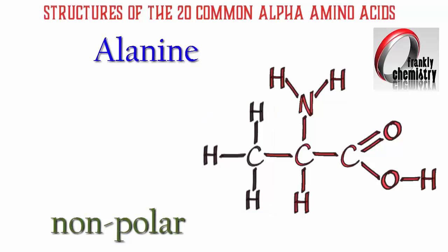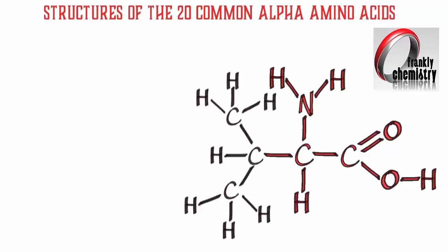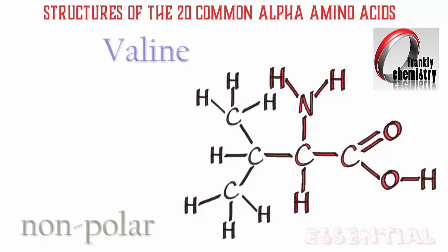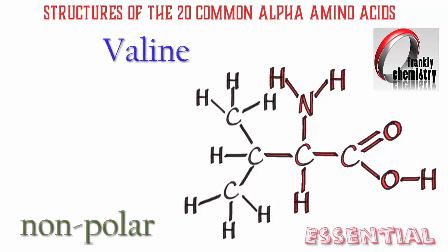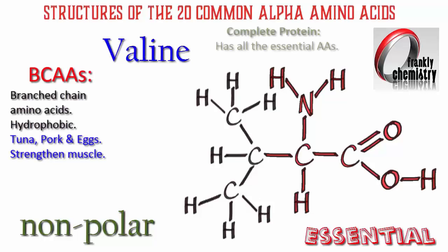Remember, there are four categories: nonpolar, polar, acidic and basic. The next three amino acids, starting with valine, fit into a category known as BCAAs, which stands for branched chain amino acids. They are all nonpolar, which makes them hydrophobic. Valine is an essential amino acid — our body cannot synthesize it, so it has to be provided in our food.